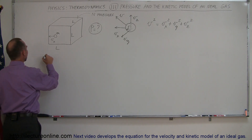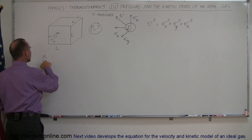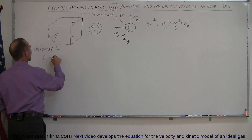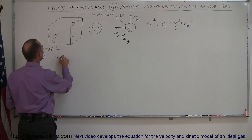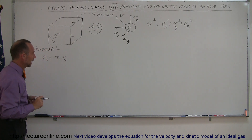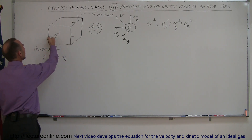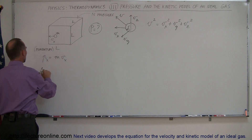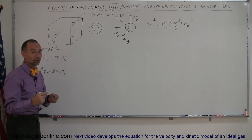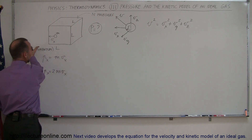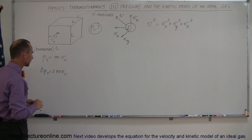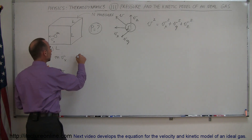To calculate pressure, we start with momentum — I'll use lowercase p. Momentum equals the mass of the molecule times the velocity in the x direction, giving us the momentum in the x direction. When the molecule hits the wall and bounces back, the change in momentum is twice the momentum it had, because its velocity reverses direction. So the change in momentum equals 2mv_x.